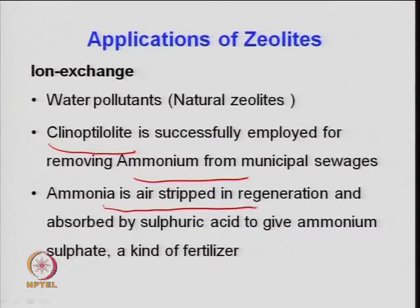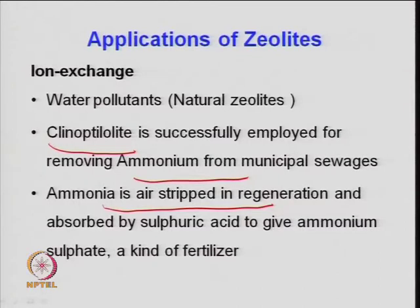Ammonia is air-stripped in regeneration and absorbed by sulfuric acid to give ammonium sulfate — a kind of fertilizer. In sewage treatment, large amounts of ammonia come from biomass nitrogen. This ammonia can be used over zeolite material, desorbed, and used for the fertilizer industry.